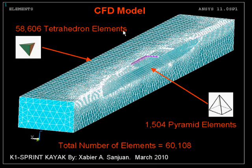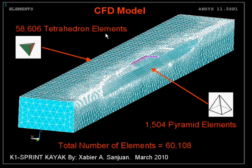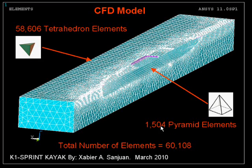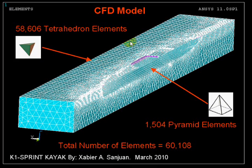The CFD model consists of about 60,000 elements — a bit more than that. These are made out of tetrahedron elements: about 58,000 tetrahedrons, which are polygons made out of four triangular sides, and there are 1,500 pyramid elements that have a quadrilateral base with four triangles.